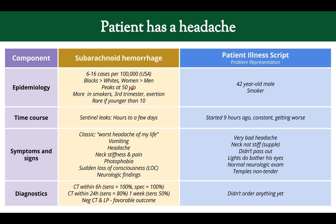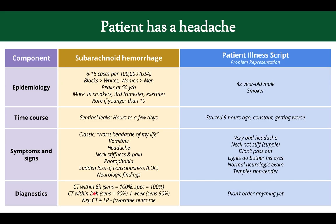Subarachnoid hemorrhage is more common in women, peaks at age 50, increases with smoking, and can be triggered by exertion or pregnancy. It's rare under age 10. Sentinel leaks occur over hours to a few days. A subarachnoid hemorrhage is an aneurysm that starts bleeding — a sentinel leak precedes the full rupture. Classic symptoms include the worst headache of your life, vomiting, neck stiffness, photophobia, sudden loss of consciousness, and neurologic findings.